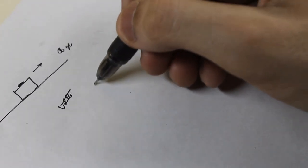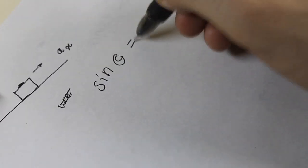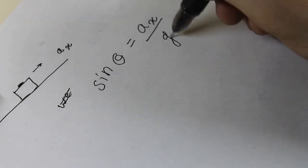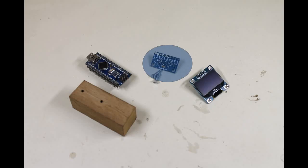So the sine of angle of inclination will be given by dividing the parallel component by the earth's acceleration due to gravity. So let's start. Our 9250 IC, a 0.96 inch OLED display as the output and an Atmel Atmega 328P in the form of Arduino Nano as the brains of the system.